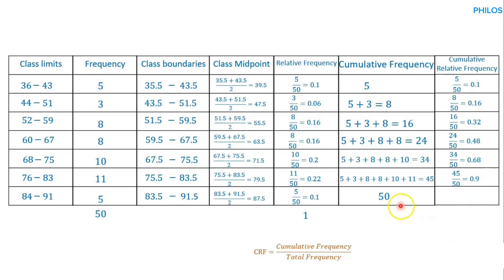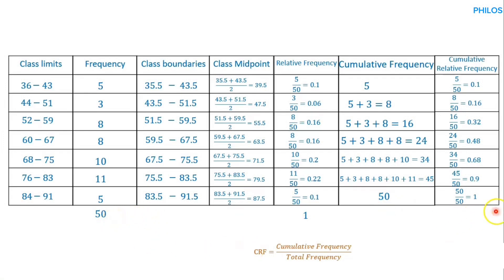For the last class, the cumulative frequency is 50; 50 divided by 50 gives 1. The last cumulative relative frequency will always be 1 — just as the last cumulative frequency equals the total frequency, the last cumulative relative frequency will equal the sum of all relative frequencies, which is 1.